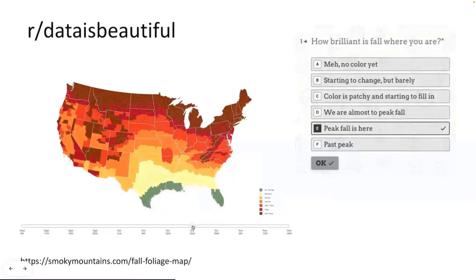For my first example, I decided to look to Reddit. Those of you that use Reddit might come across the subreddit r/dataisbeautiful, which is a really good source of inspiration if you're looking to create your own visualizations. I found the first example here, which is a simple interactive map that shows the peak foliage across the US during the autumn season. Emma should be putting the website in the chat now.